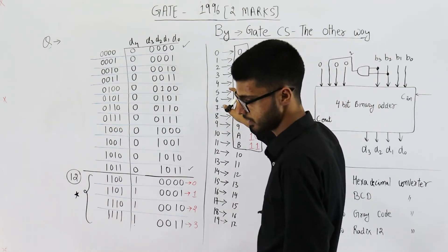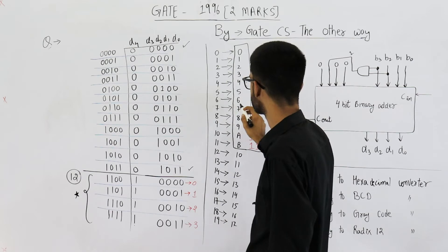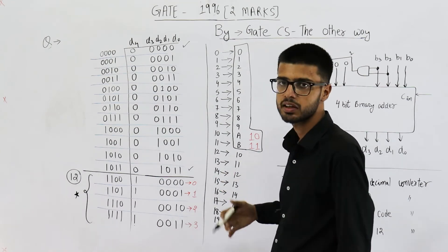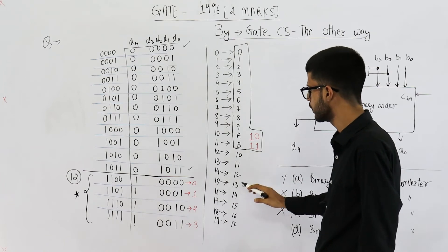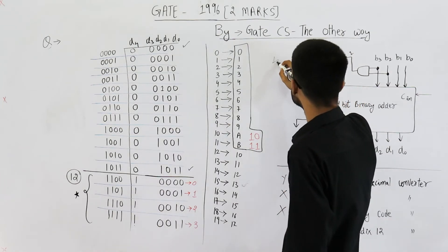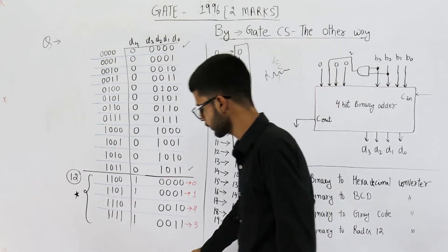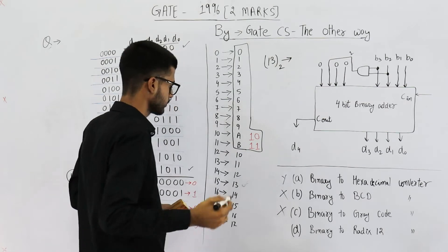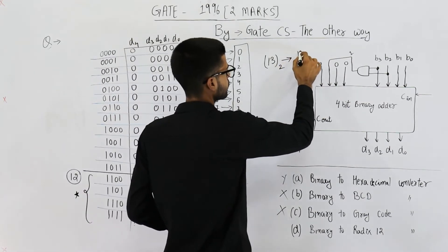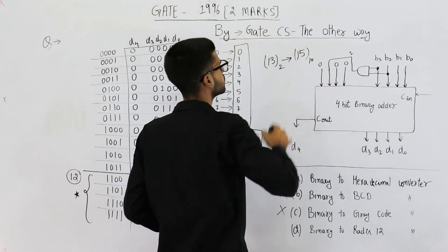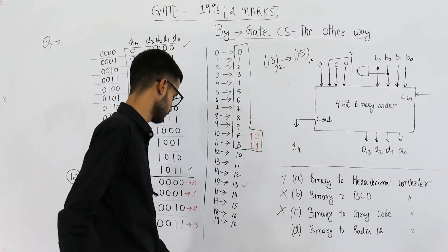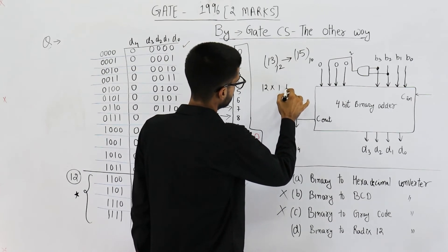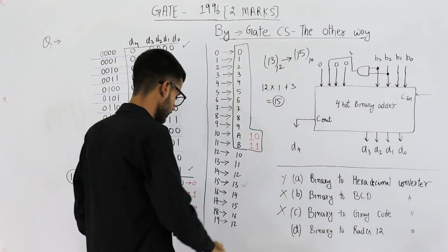Now you see, this is the binary to base 12 conversion. For example, 7 is written as 7 in base 12 only. 10 is written as A in base 12. 14 is written as 12 in base 12. 15 is written as 13 in base 12. You can convert 13. If you convert 13 from base 12 to base 10, you are going to get 15. This will be 12 into 1 plus 3, which is obviously 15. So, these are the conversions.